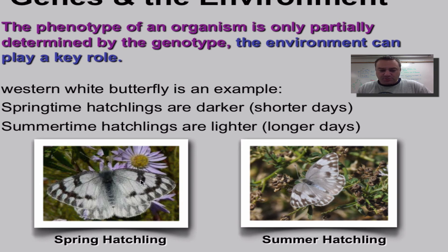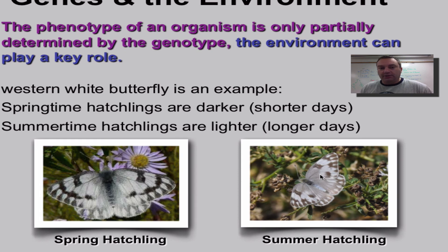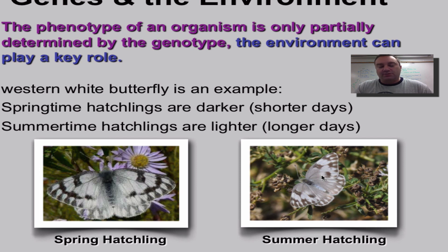As you can see, the environment has affected the phenotype. In the springtime darker black spots are on their wings, and in the summertime a browner or lighter color of spots are on their wings. So it's not necessarily just the genotype that determines your phenotype — the environment can have a great influence. And that'll wrap it up for this series; until our next chapter, we'll catch you on the flip side.